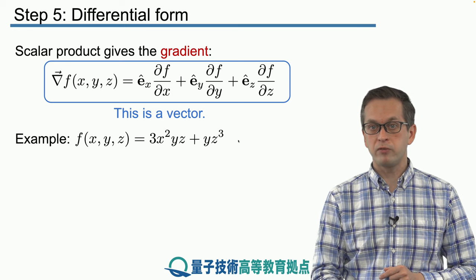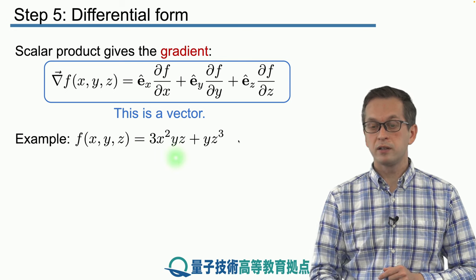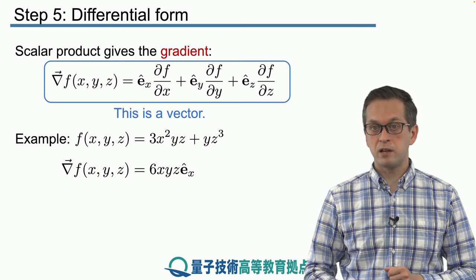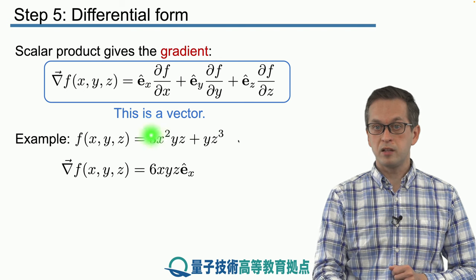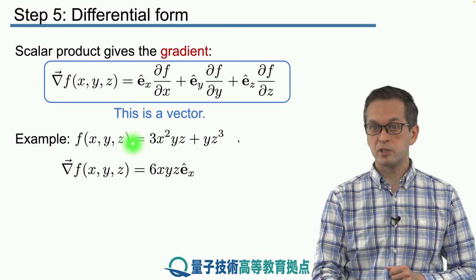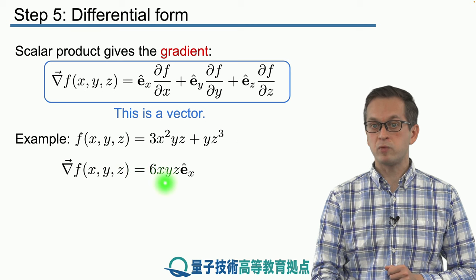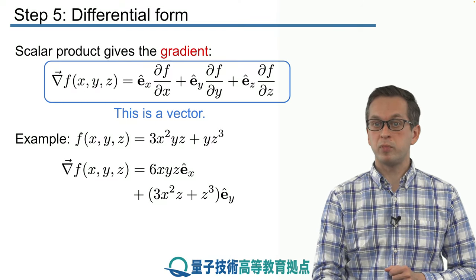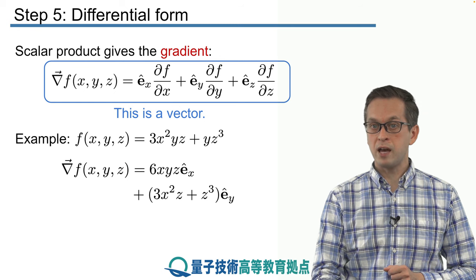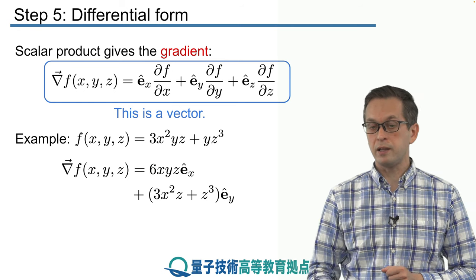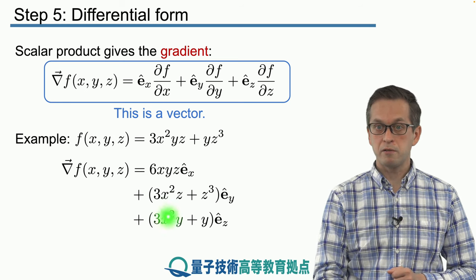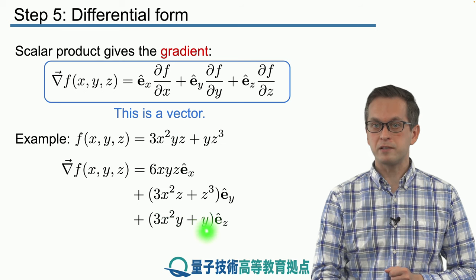For example, given a particular scalar field, we can compute its gradient: the partial derivative with respect to x gives 6xyz as the x component; the y component is 3x²z + z³, obtained by differentiating f with respect to y; and the z component is 3x²y + 3yz², obtained by differentiating f with respect to z.